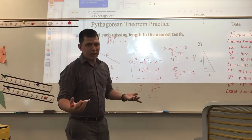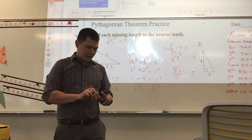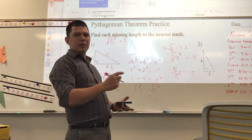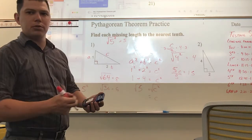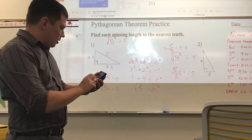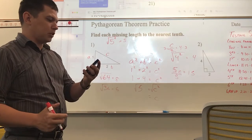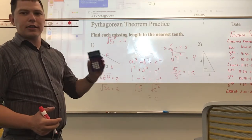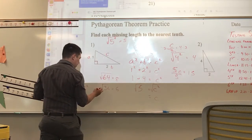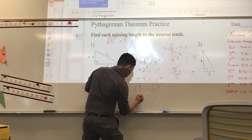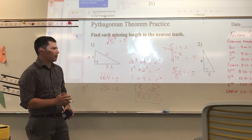What number times itself is 5? You're not going to be able to do that in your head — you're going to need to use a calculator. There is a square root function on pretty much every calculator. You hit 5, square root button, and it gives you 2.2360679. That's a really long decimal, but we're going to round to the nearest tenth. So 2.23 rounds to 2.2, and that's your solution — 2.2 is the length of that missing side.